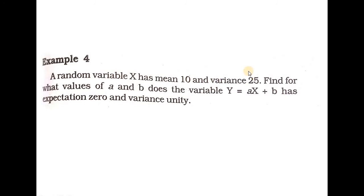Now a new problem: Find for what values of a and b the variable Y equals aX plus b has expectation E(Y) equal to 0 and variance equal to 1, given that E(X) equals 10 and variance of X equals 25.